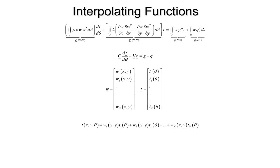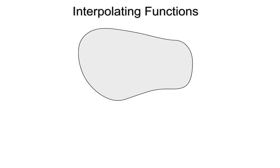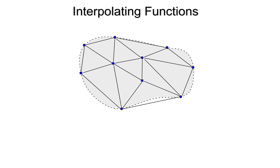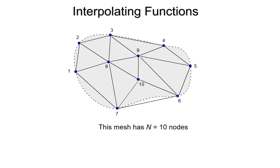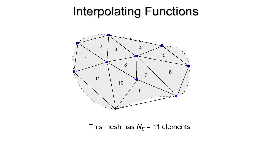Today we're going to talk more specifically about what W and T are. Those area integrals have to be done over our computational domain. We're going to break our computational domain up into triangular elements using a mesh. We have a bunch of nodes placed around the computational domain, joined up to make triangles that become our elements. This particular mesh has 10 nodes and 11 elements — 11 triangles that cover the entire domain.